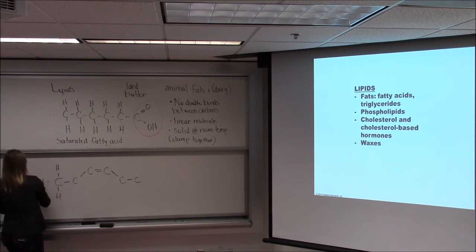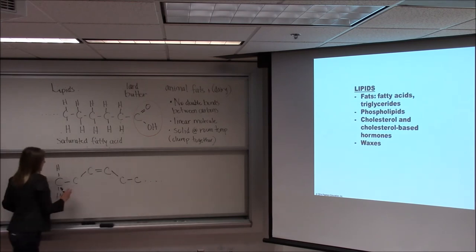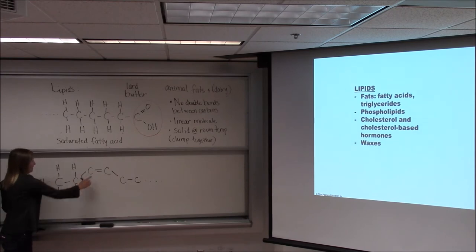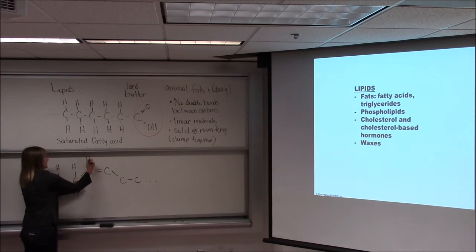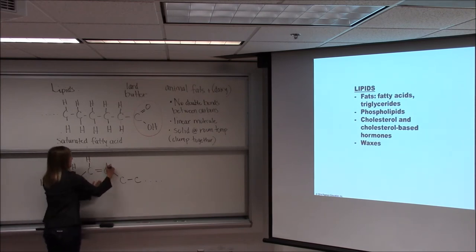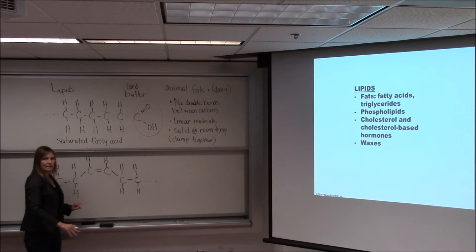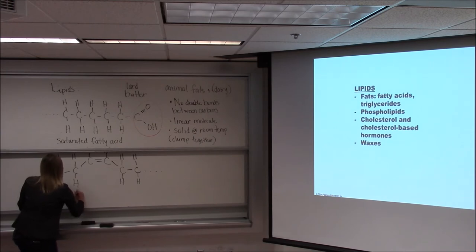Looking at the structure: a carbon in a double bond already has three pairs of electrons being shared — one, two, three — so it can only hold one hydrogen. Compare that to a carbon with only single bonds, which needs two hydrogens. So the carbons involved in the double bond are not fully saturated with hydrogen.